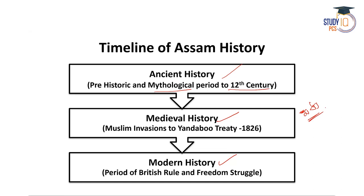In the medieval period, I will discuss the Muslim invasions of Assam up to the Treaty of Yandabu, signed in 1826. The Yandabu Treaty marks the end of the medieval period in Assam. Then comes the modern history, which includes the period of British rule in Assam as well as the freedom struggle.